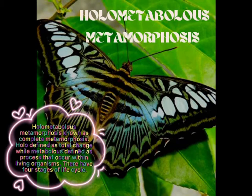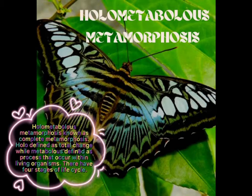Holometabolous metamorphosis, usually known as complete metamorphosis. In detail, 'holo' is defined as total change and 'metabolos' is defined as the process that occurs within living organisms. This holometabolous metamorphosis has four stages of life cycle: egg, larva, pupa, and adult.